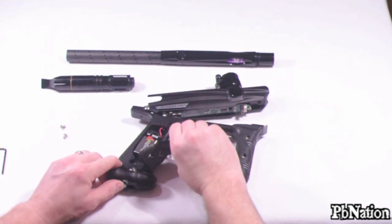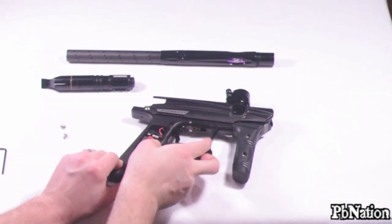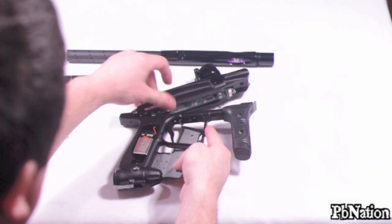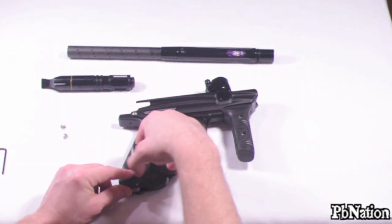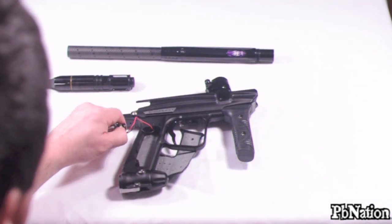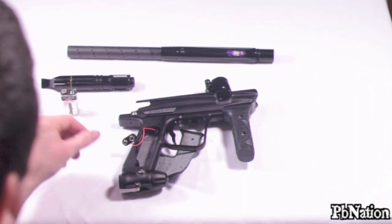There's nothing in the grip frame itself aside from just the battery and the wiring harness. Now, when you close the gun back up, you want to make sure that that wiring harness is taut.